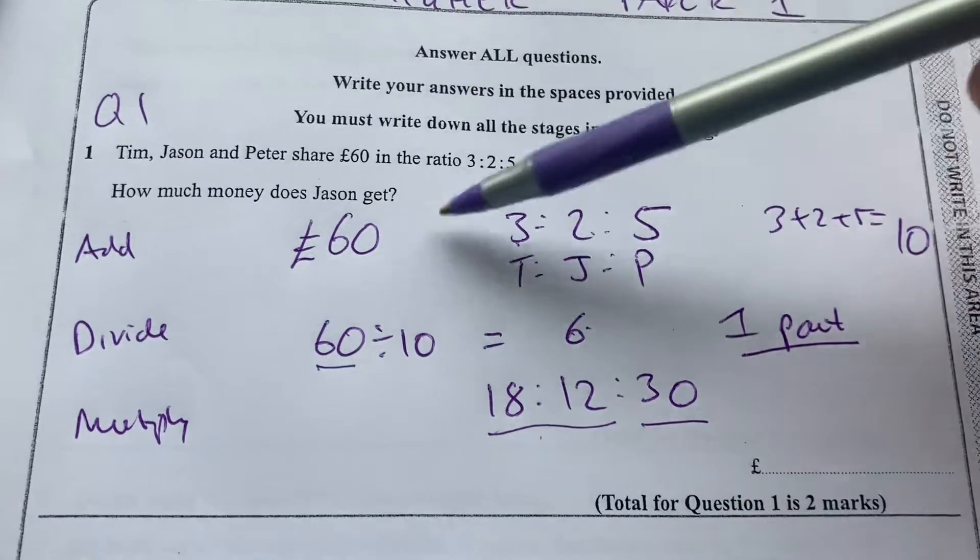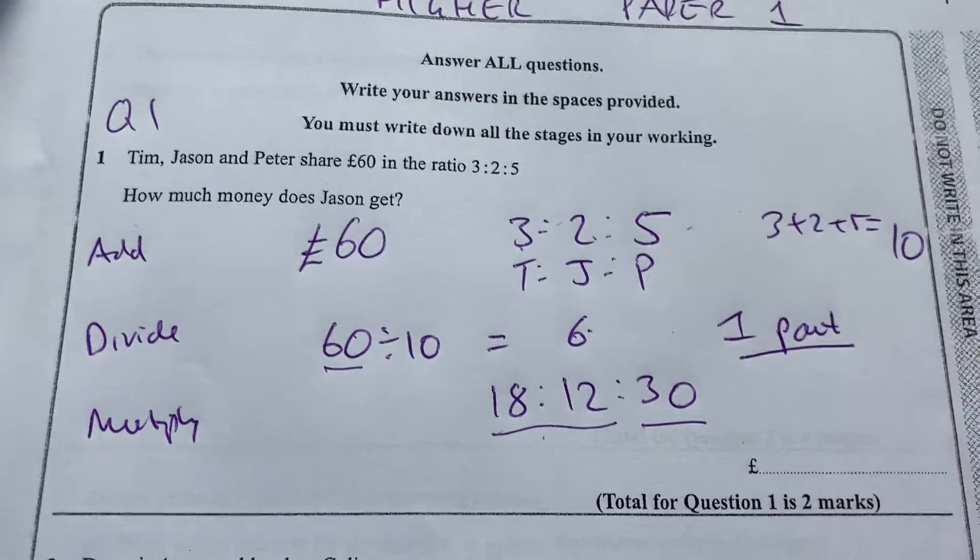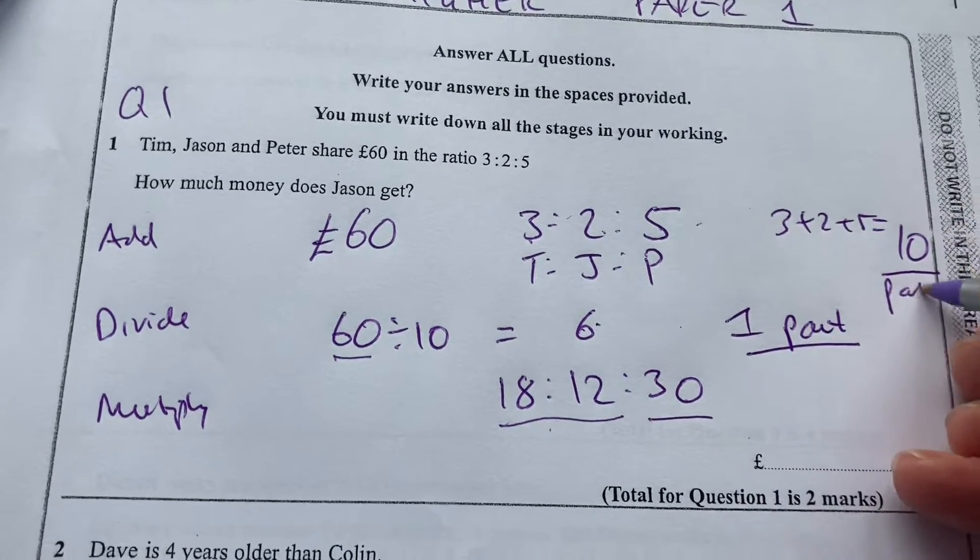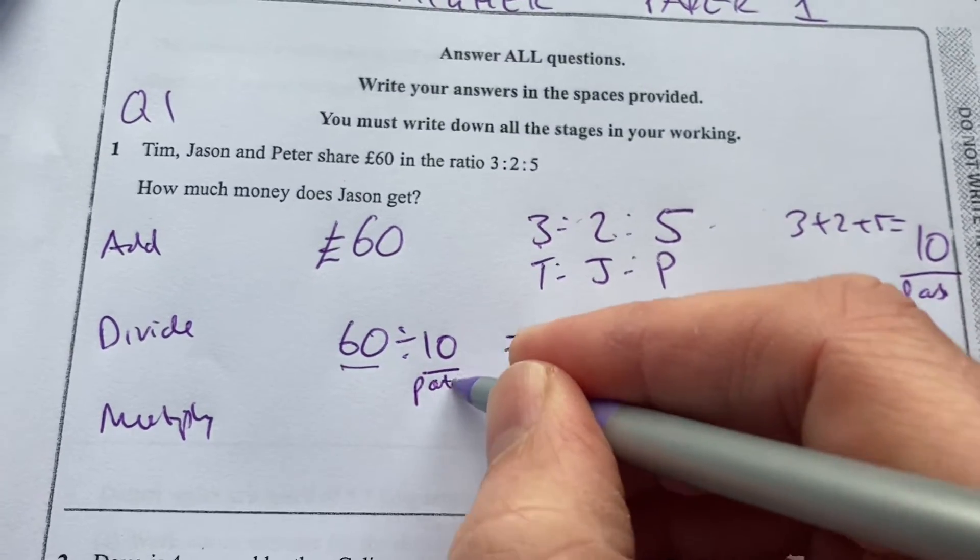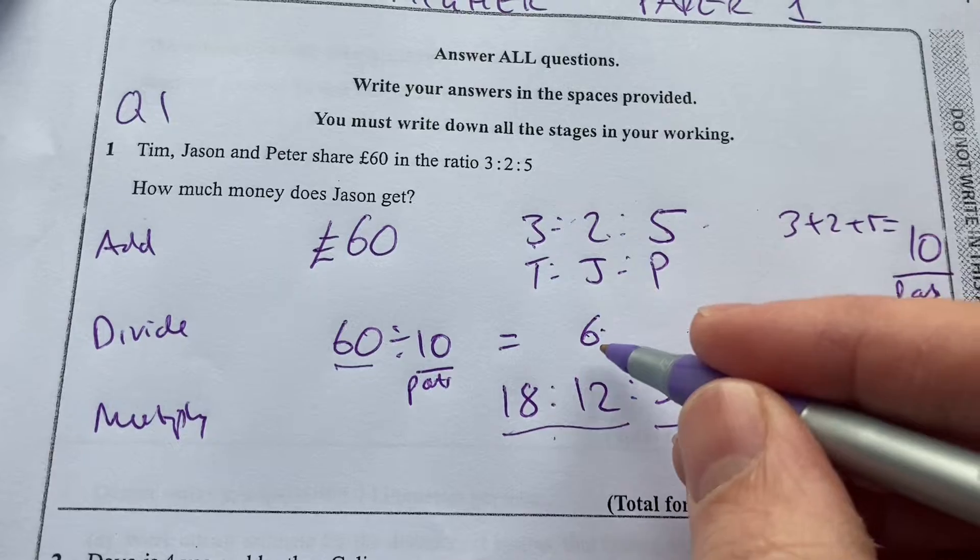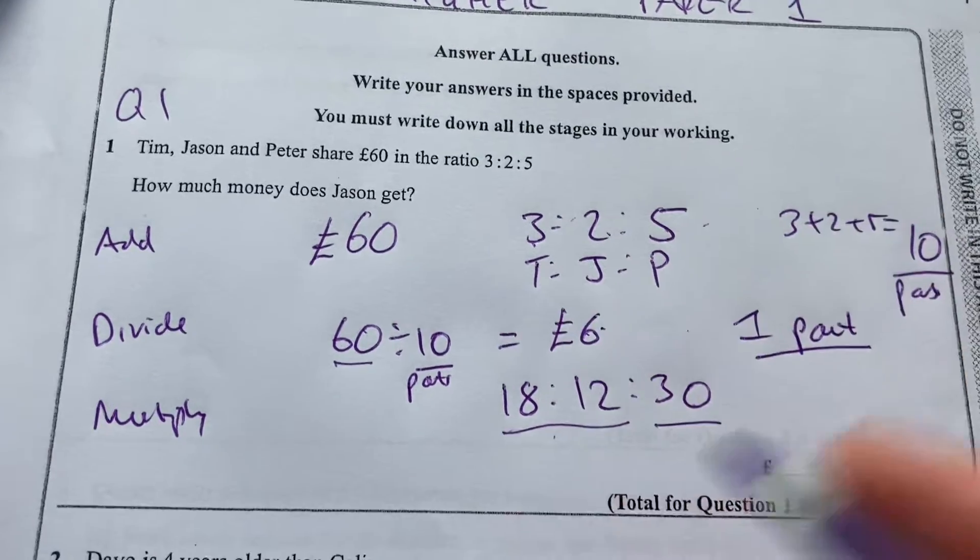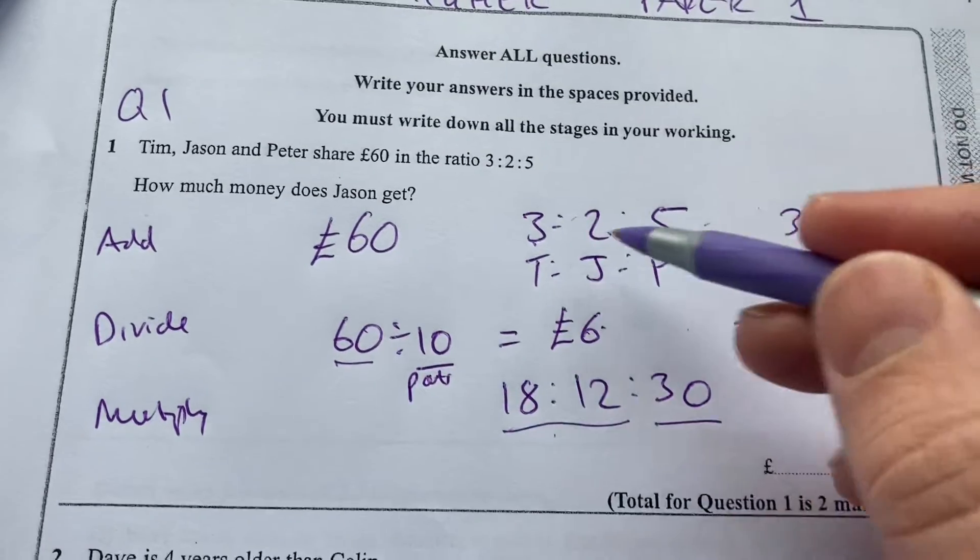So just to go through that again, you add up all the parts. There are 10 parts. You divide that total by 10 to break it into 10 parts. So each part is worth £6. And then you multiply up 3 to 2 to 5.